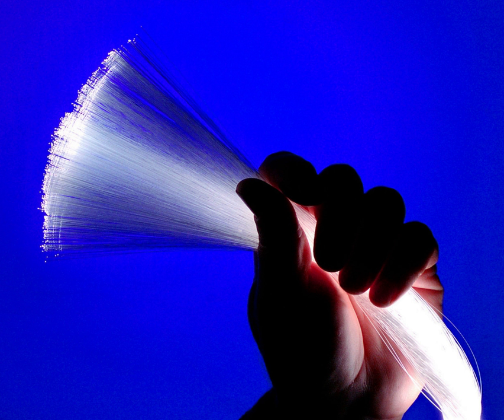Network surveillance is the monitoring of data being transferred over computer networks such as the Internet. The monitoring is often done surreptitiously and may be done by or at the behest of governments, by corporations, criminal organizations, or individuals. It may or may not be legal and may or may not require authorization from a court or other independent agency. Computer and network surveillance programs are widespread today, and almost all Internet traffic is or could potentially be monitored for clues to illegal activity.